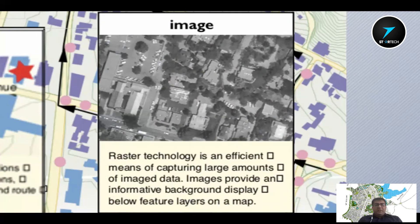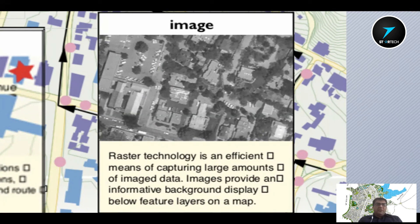Image के अपने advantages और disadvantages हैं, क्योंकि image एक raster technology है, vector technology नहीं है। Raster के अपने advantages हैं और कुछ limitations भी हैं — इस पर distance measurement में आपको compromise करना पड़ेगा और root finding उस तरह से नहीं हो सकती जैसे vectors में होती है। अब raster और vector technology दोनों को साथ लेके चलना है, इसलिए हमारे geodatabases ऐसी technology हैं जो इन तमाम features को एक ही जगह पर store रखती हैं।